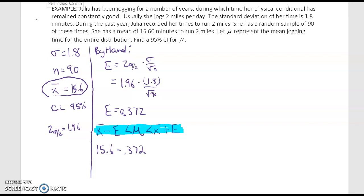So mu is between that and it's between 15.6 plus 0.372. So when we calculate those values we'll get 15.23 to 15.972. So mu goes from 15.23 minutes to 15.972 minutes. And that's our 95 percent confidence interval for her mean running time.